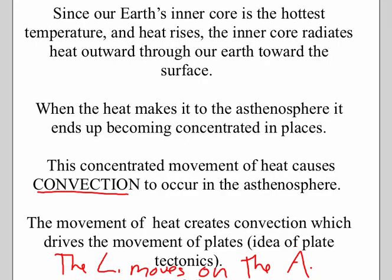You've got to go back to the big idea. Since the Earth's inner core, or the center of the Earth, is the hottest temperature and highest pressure, and heat rises, the inner core radiates heat outwards all the way up to and beyond the Earth's surface. When heat makes it to a layer, it ends up becoming concentrated in places.